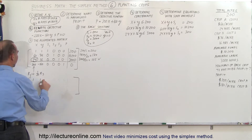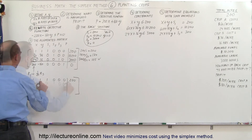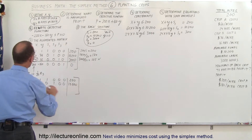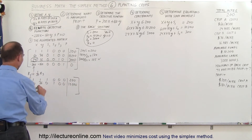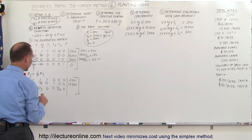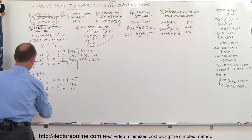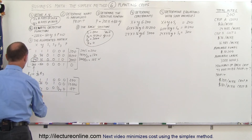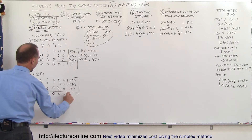When we do that we have the following matrix. Row 1 doesn't change. Row 2 doesn't change. Row 3 is divided by 24, making the pivot entry a 1. That gives: 1, 2/3, 0, 0, 1/24, 0, and 3,000 divided by 24 equals 125. The fourth row doesn't change: minus 200, minus 160, 0, 0, 0, 1, and 0.